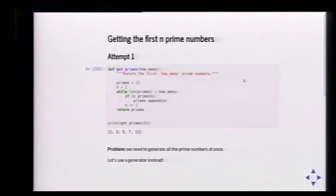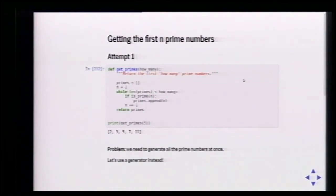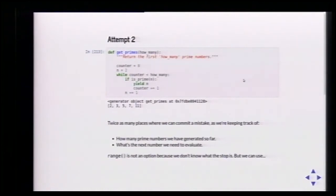To get the first N prime numbers, we build an empty list and keep trying numbers — if the number is prime, we put it in the list and finally return it. But the problem is we're returning all the prime numbers at the same time. So let's use a generator — it's exactly the same but we don't use that memory in a list. We can return prime numbers as we generate them. But we're doing two different things: keeping track of how many we've generated and what's the next number to evaluate.